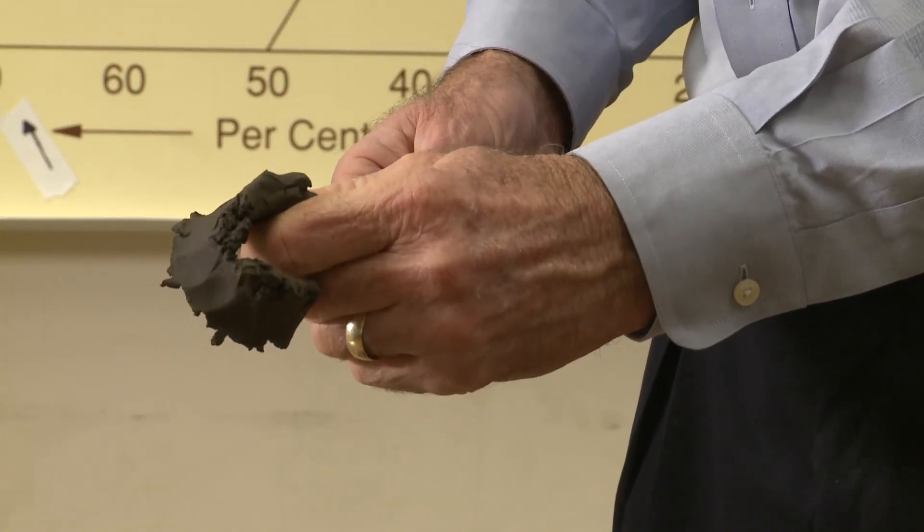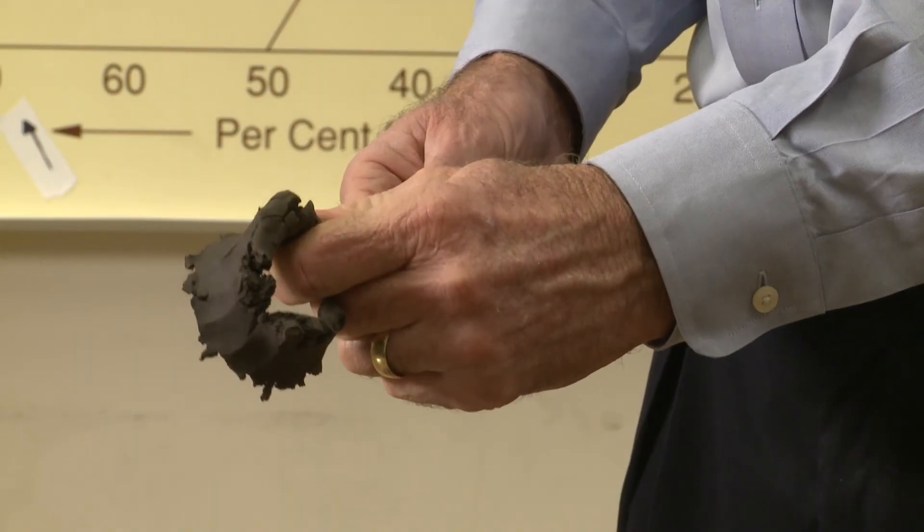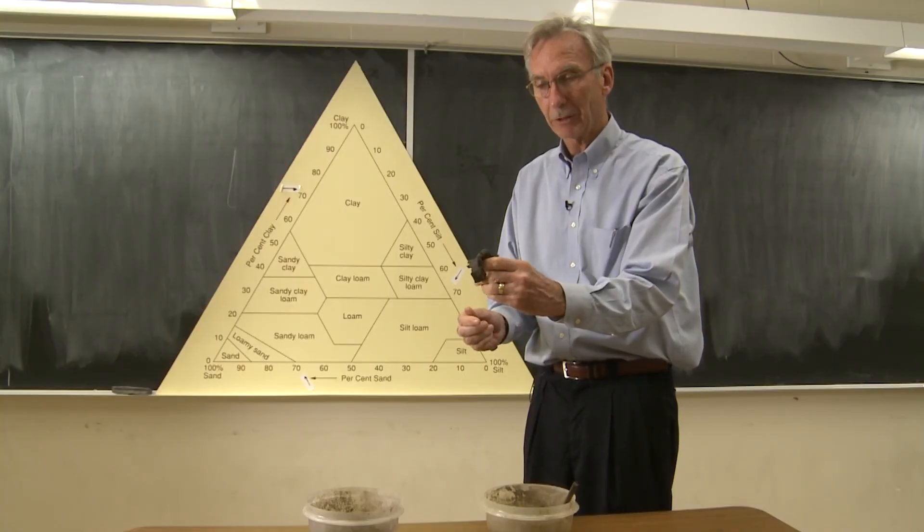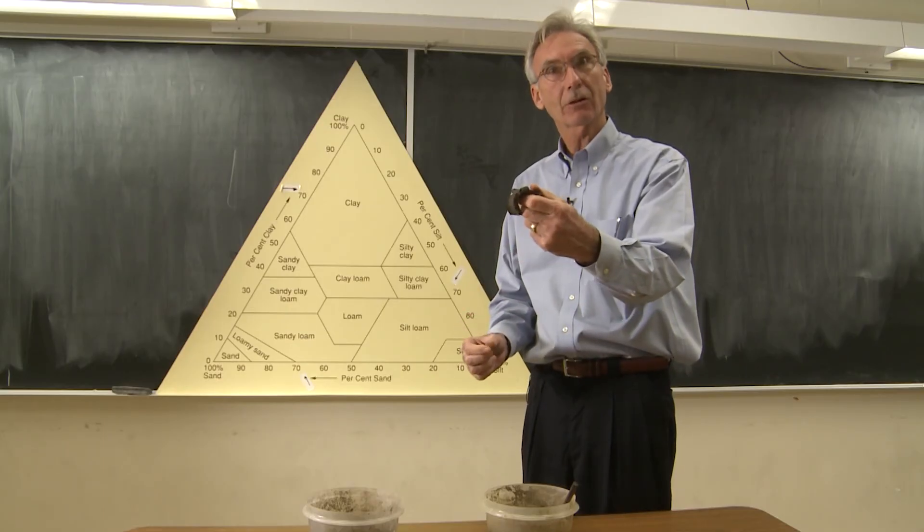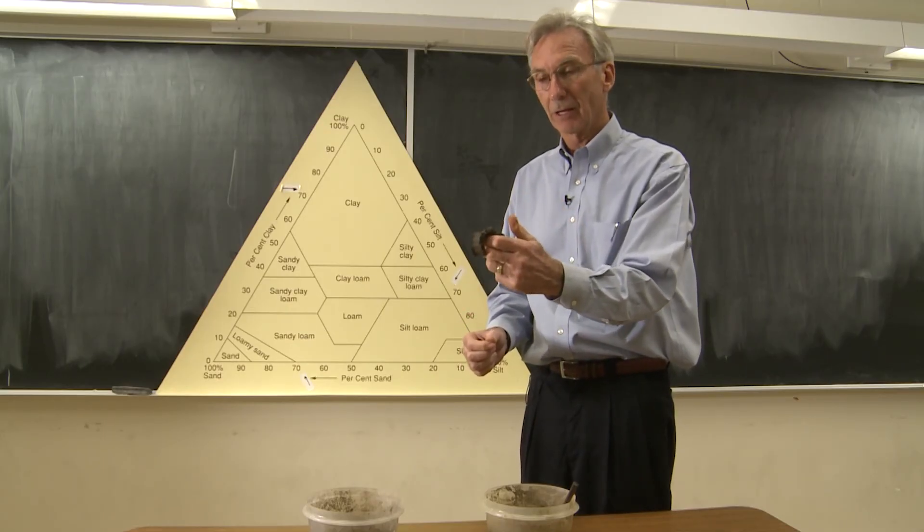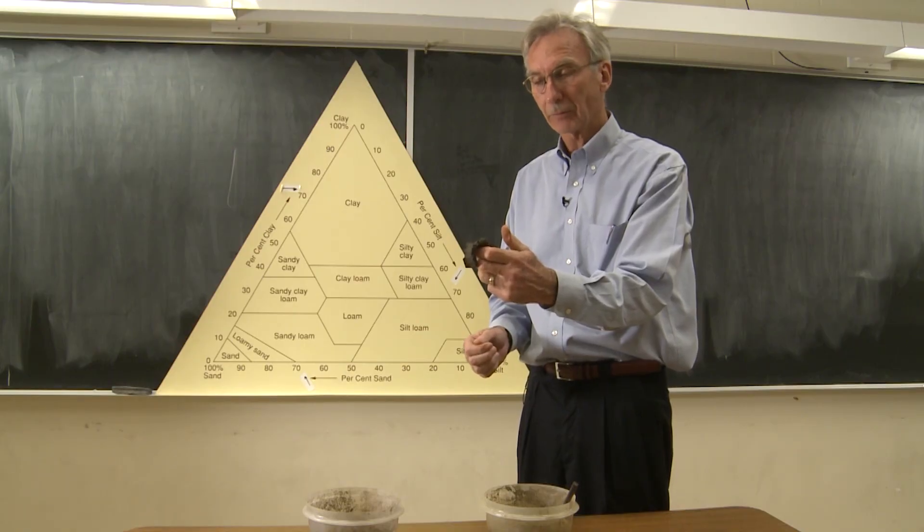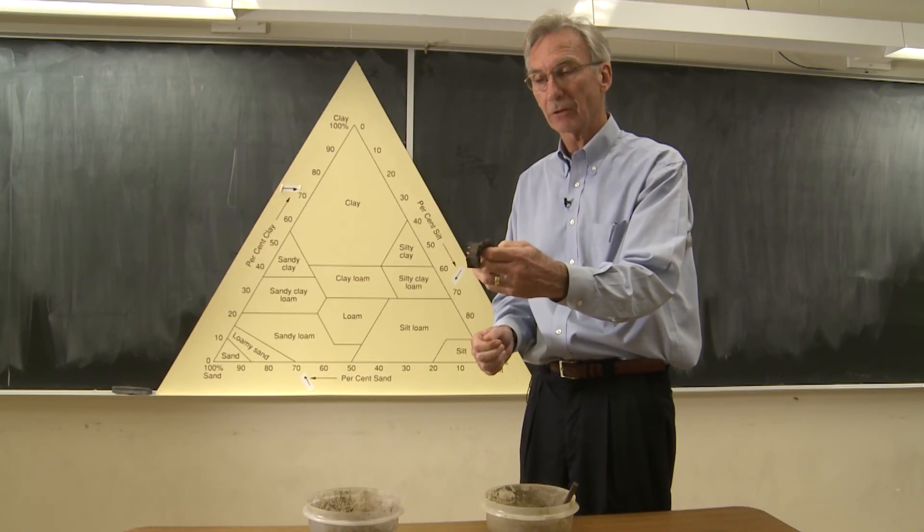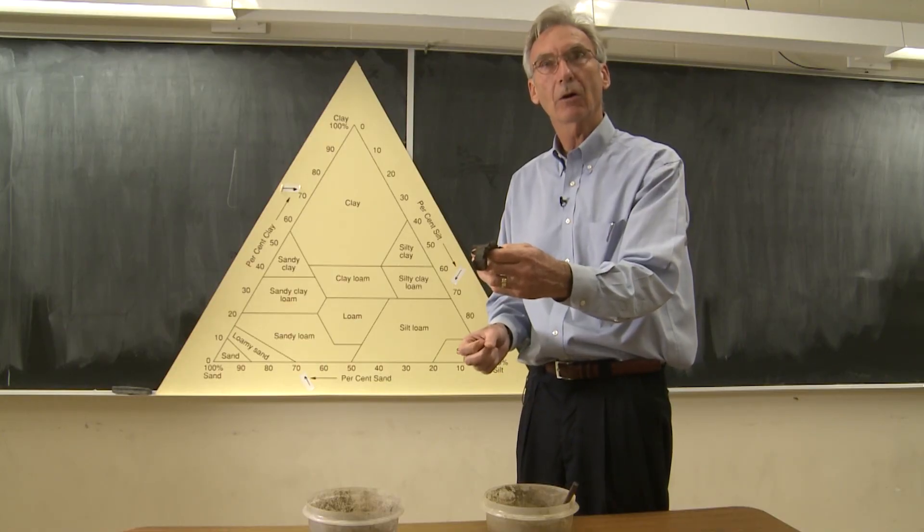And what you notice about this sample is look at that ribbon. And that ribbon tells you that there's a lot of clay in that sample. In fact, it's a smooth sample. It has a fair amount of clay in it. Chances are it's either a silty clay loam or a silt loam.